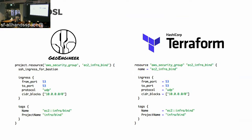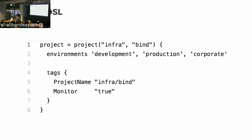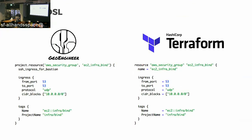You can see this is definitively Ruby. This is a sub-object on a project — a concept built into Geoengineer where resources are part of a larger project. The idea is that you have a project where you define metadata about all the resources that follow it. You have tags that are going to be set on every single resource, ensuring you monitor all of these resources because they're important. You can also see convenience functions you can add — like SSH ingress for Bastion.